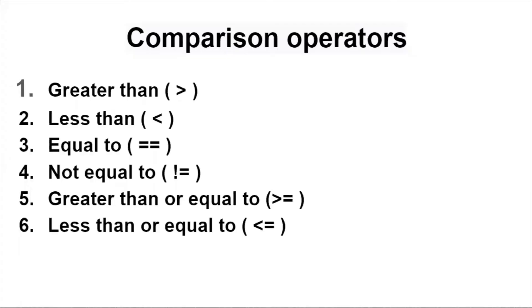Next we have comparison operators. There are six comparison operators in Python. They are: greater than, less than, equal to, not equal to, greater than or equal to, and less than or equal to.